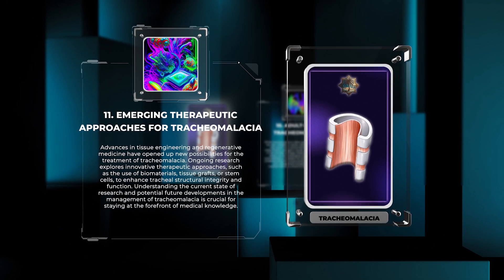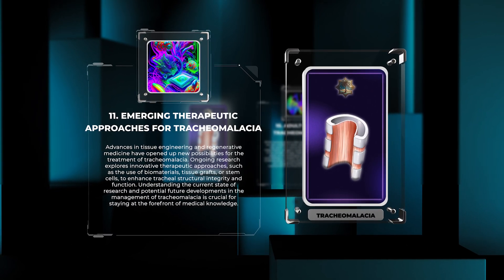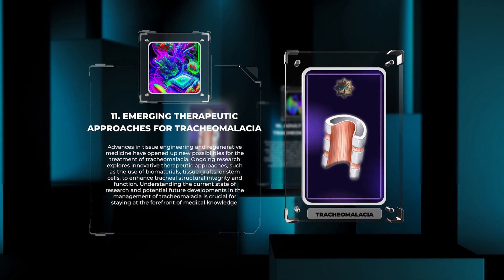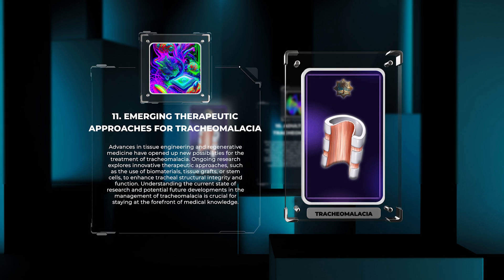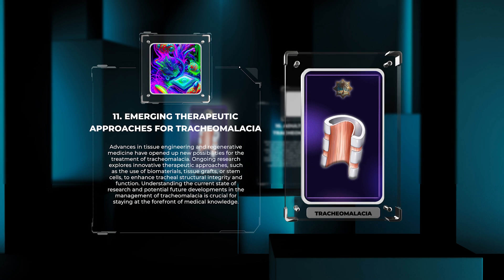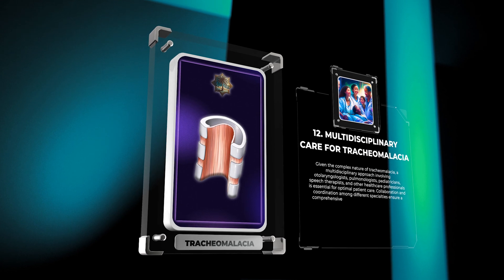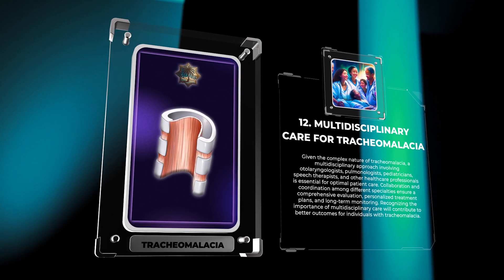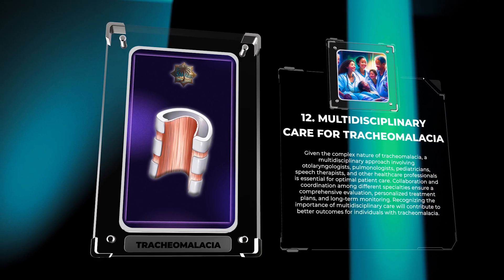Advances in tissue engineering and regenerative medicine have opened up new possibilities for the treatment of tracheomalacia. Ongoing research explores innovative therapeutic approaches such as the use of biomaterials, tissue grafts, or stem cells to enhance tracheal structural integrity and function. Understanding the current state of research and potential future developments in the management of tracheomalacia is crucial for staying at the forefront of medical knowledge.